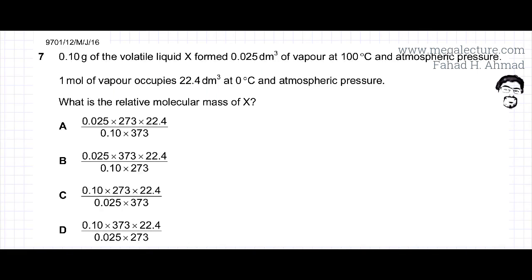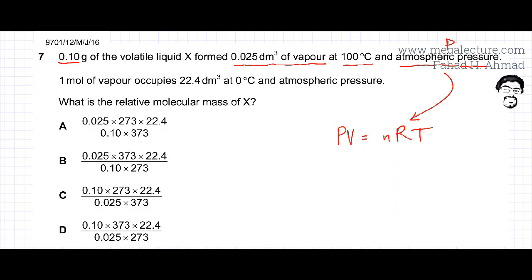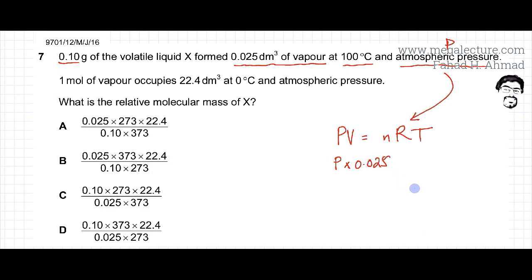For X, the mass is already known — it is 0.1 grams. The volume of the vapor is also given as 0.025 dm³, and the temperature is given, but atmospheric pressure is not provided, so we will call that P. Using the ideal gas equation, pressure is taken as P, and the volume of 0.025 dm³ must be converted to m³ by multiplying by 10 to the power minus 3.